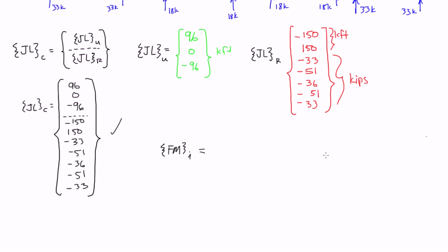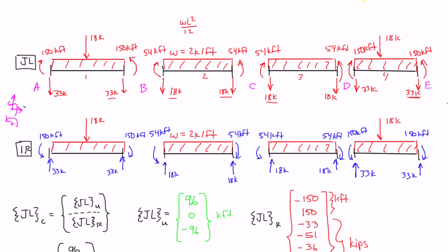The way we construct this is we start with one element at a time, and we have four elements. We go back to our old sign labeling convention and go left to right for our degrees of freedom. We do rotations first, verticals next, then horizontal.